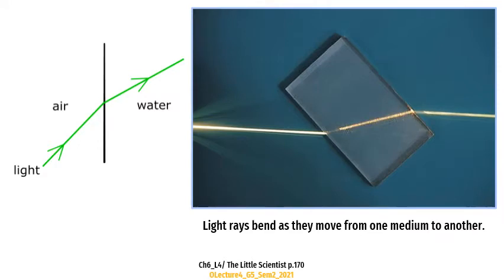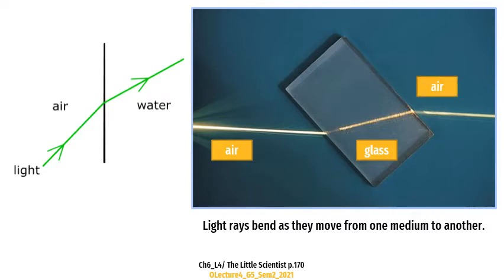Now let's talk about something else. A laser light source is sent to the separation surface between the air and the glass. Did the light ray continue in a straight line? No. You can clearly see that the light ray is broken — it bends a bit. And also, when the light ray leaves the glass to the air, it bends again. Light rays change their direction when they move from one transparent region to another. A light ray passes from the air to the water — it does not continue straight; it bends. That's what we call refraction.